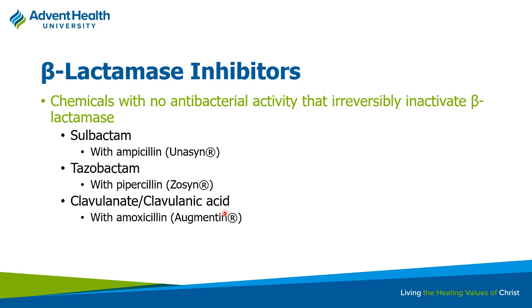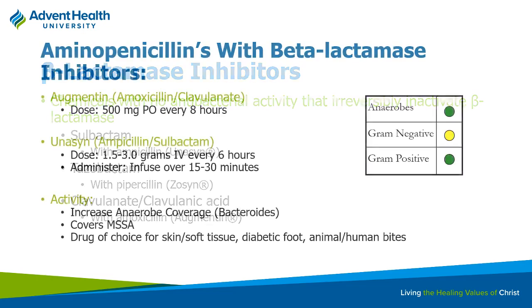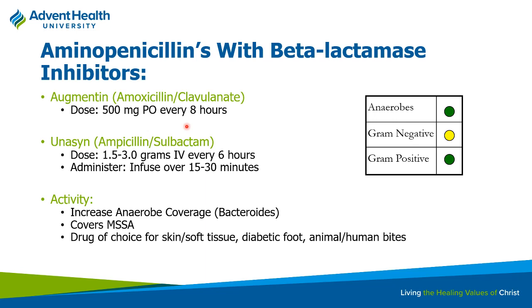Beta-lactamase inhibitors have no direct antibiotic activity themselves, but they keep the beta-lactamase enzyme busy long enough for the penicillin to come in and kill the bacteria. They're always found in combination with a penicillin. Sulbactam is usually mixed with ampicillin to create Unasyn. Tazobactam is mixed with piperacillin. Clavulanic acid is probably the most familiar — it gets mixed with amoxicillin to create Augmentin. In terms of coverage, you get really good gram-positive and really good anaerobic coverage, though still not great for gram-negatives.